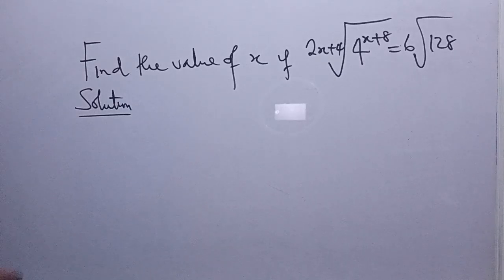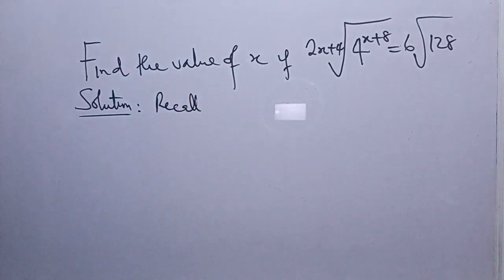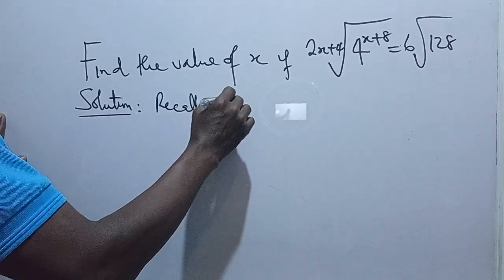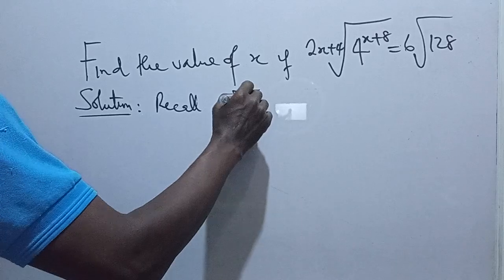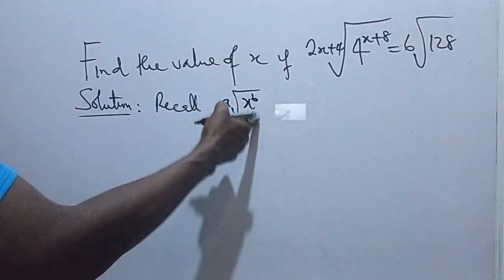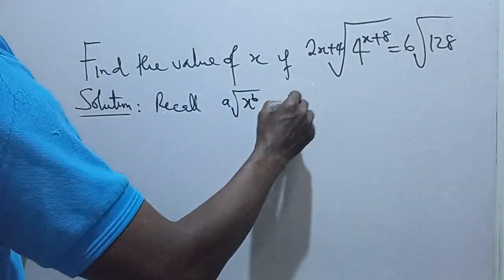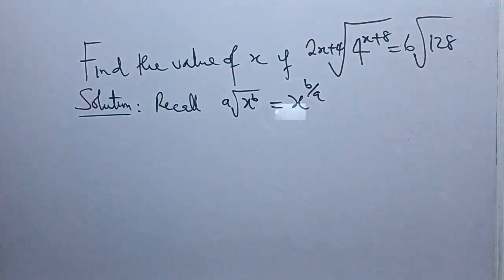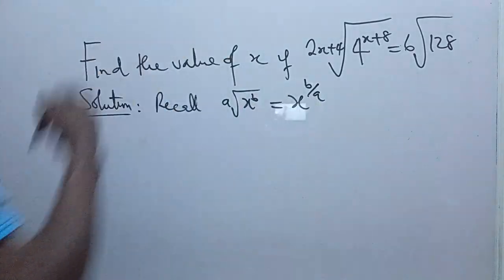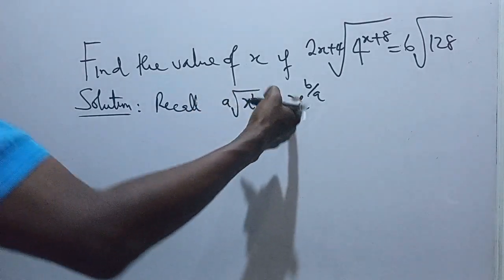So now, how do we go about this? Let's recall something about indices. In indices, if you have a, the root of x raised power b, we have the ath root of x raised power b. According to the law of indices, it will be x raised power b over a. That's the way we write it. The a here will now be the denominator of the exponent of x. So we can use that method to solve this.